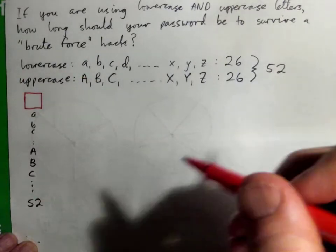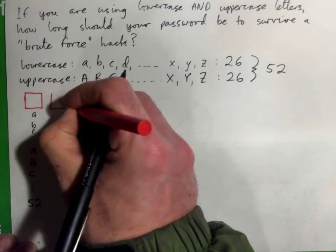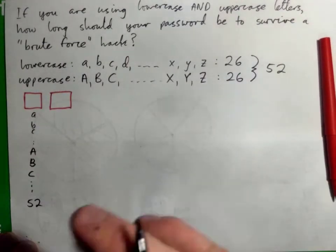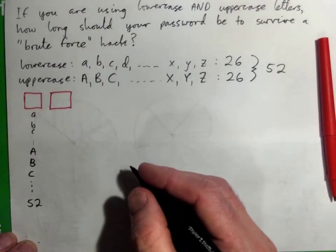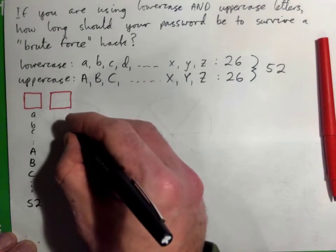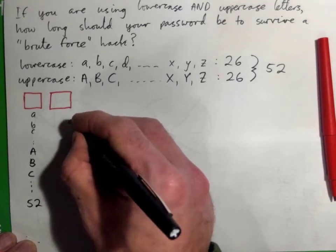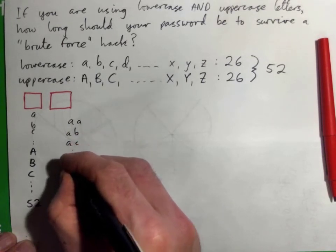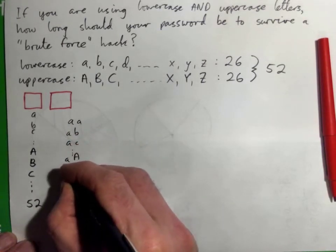If our password is two letters long and we're using lower and uppercase letters, how many two-letter combinations can we have? The passwords could look like this: AA, AB, AC, on and on and on, or uppercase AA, AB...